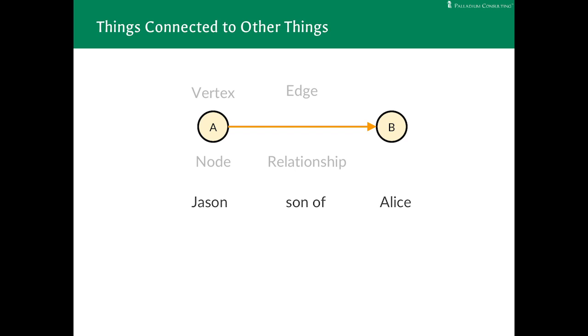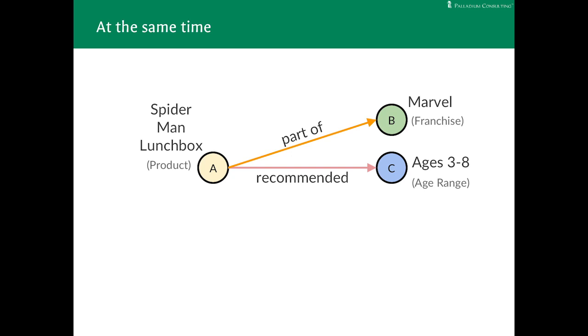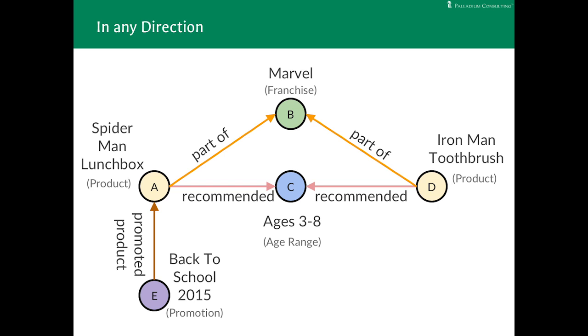You can connect different kinds of things. For instance, a retailer noting that a Spider-Man lunchbox is part of the Marvel comic books franchise. Vertices can have many edges. They can participate in many relationships. That lunchbox is both part of the Marvel franchise and is recommended for ages three to eight. And the links can also go in lots of directions. The Iron Man toothbrush is also part of the same franchise and recommended for the same age range, but only the Spider-Man lunchbox was promoted in this year's back-to-school sale.